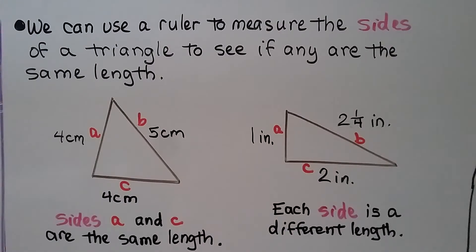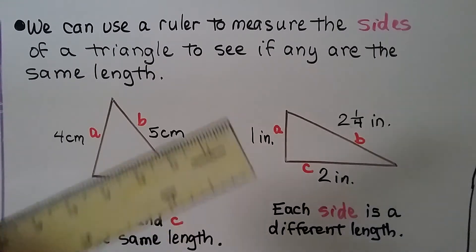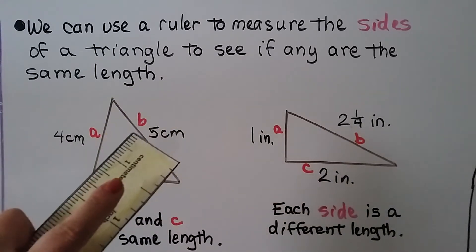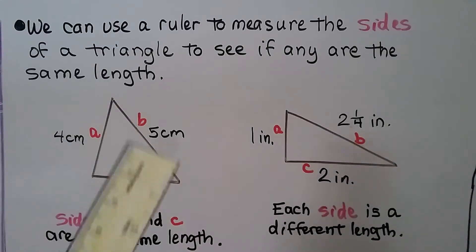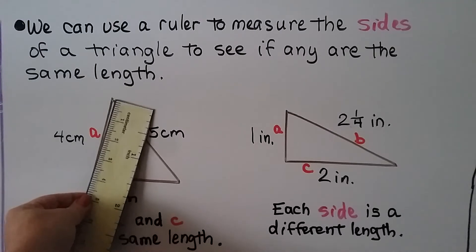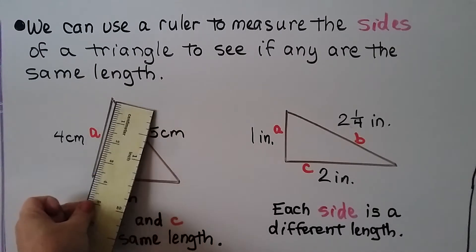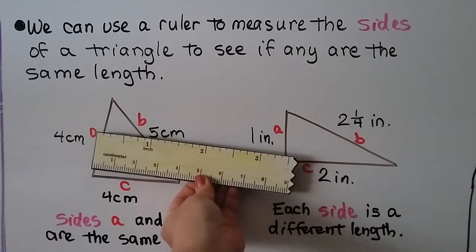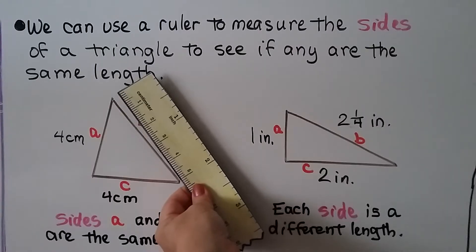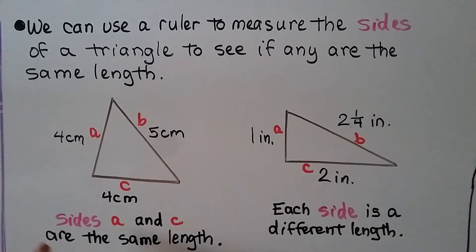We can use a ruler to measure the sides of a triangle to see if any are the same length. Using the centimeter side, we line it up and see that one side is four centimeters, another side is four centimeters, and the third side is five centimeters. Sides A and C are the same length — they're both four centimeters.